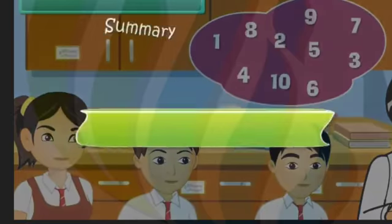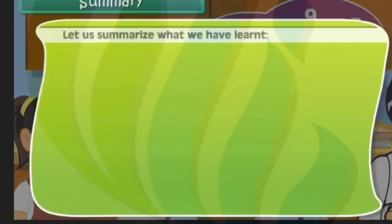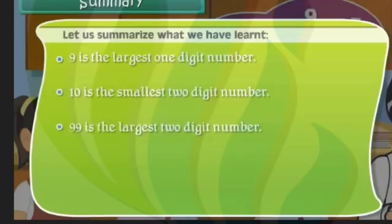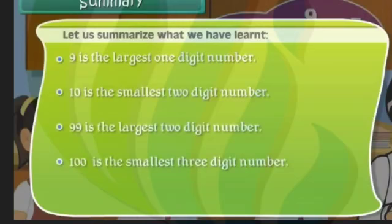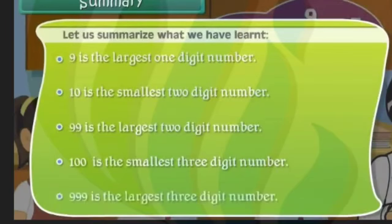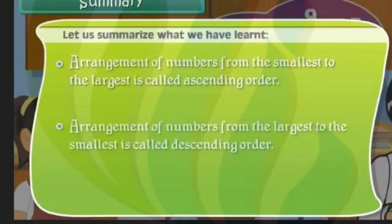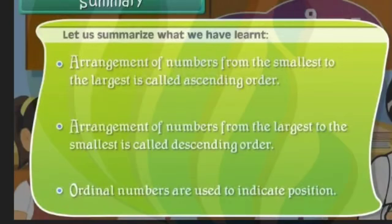Let us summarize what we have learned. Nine is the largest one-digit number. Ten is the smallest two-digit number. Ninety-nine is the largest two-digit number. Hundred is the smallest three-digit number and nine-hundred and ninety-nine is the largest three-digit number. Arrangement from smallest to largest is called ascending order, and from largest to smallest is called descending order. Ordinal numbers are used to indicate position.